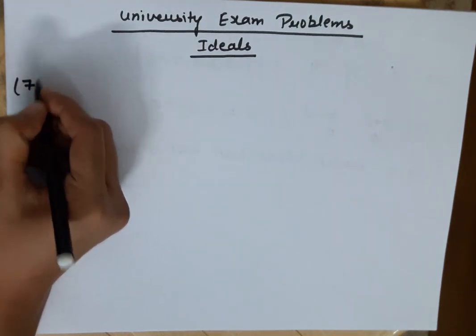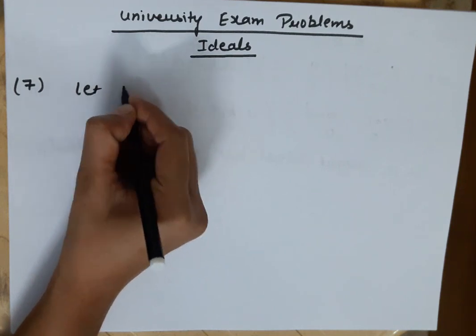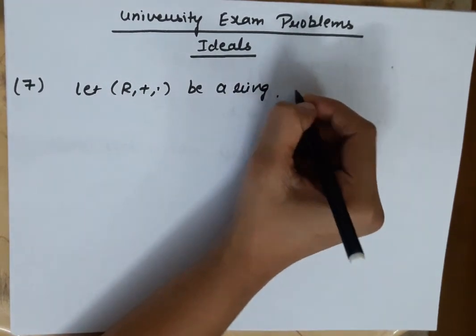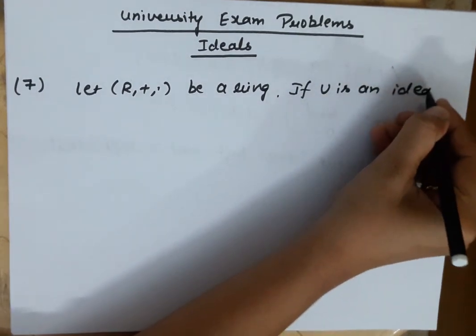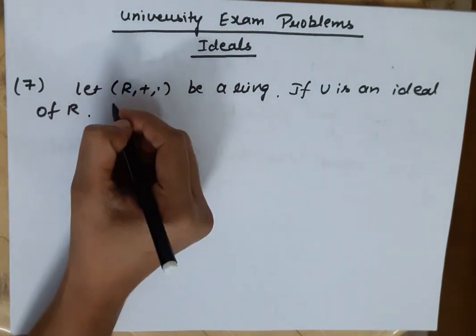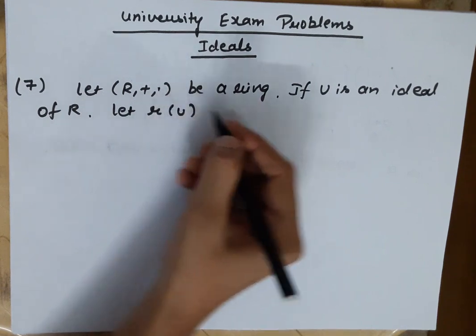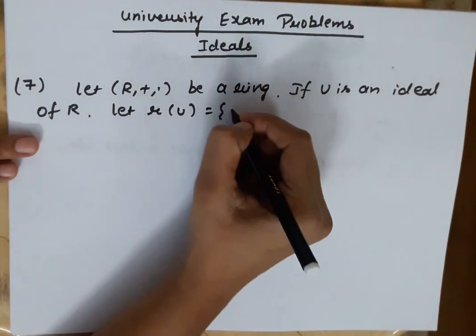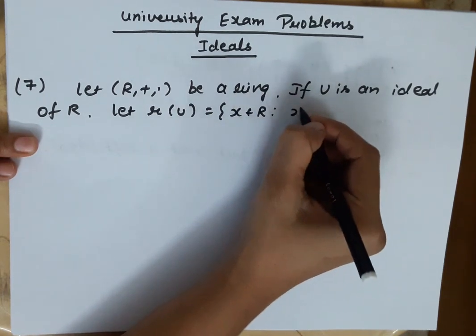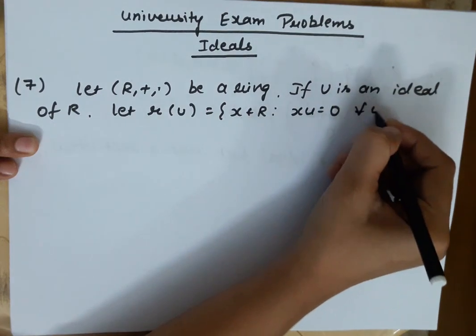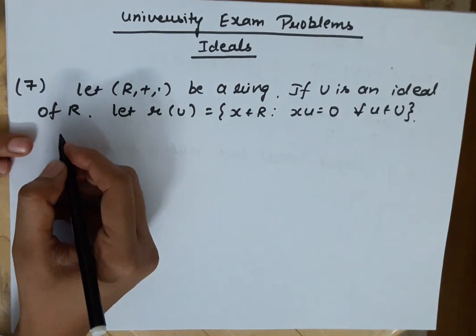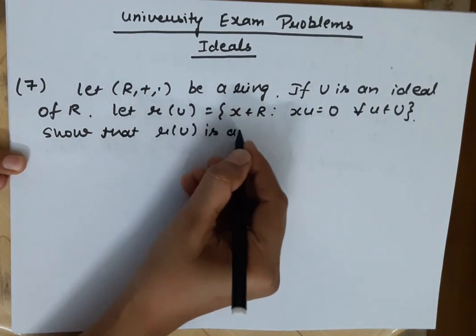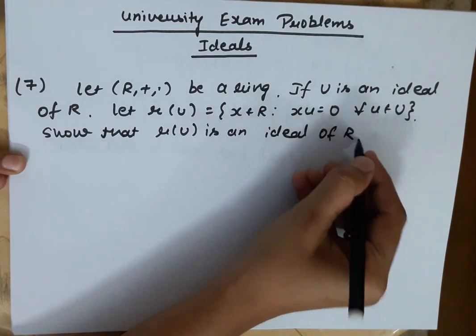Let's start with Problem Number 7. Let (R, +, ·) be a ring and let U be an ideal of R. We are defining a set R(U) — the collection of elements x belonging to R such that x·u = 0 for all u belonging to U.